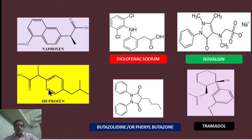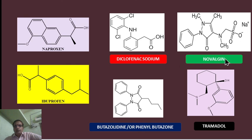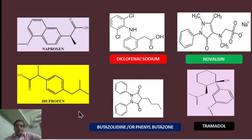These are some examples of analgesics with their structures shown here: Naproxen, Ibuprofen, Diclofenac sodium, Novalgin with a betazole unit, phenylbutazone, and Tramadol. These are the various classes of analgesics provided as examples.